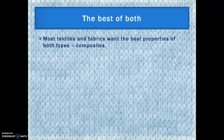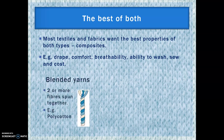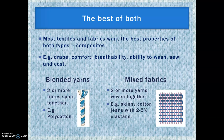Most textiles want the best properties of both natural and synthetic — we can think of these as a type of composite. To improve drape, comfort, breathability, washability, sewability, or to reduce cost, you might combine two types of fibre. This is done by either blending — spinning two or more fibres together, like poly cotton — or by mixing, where you weave two or more yarns together. For instance, skinny cotton jeans are two to five percent elastane, so in one direction you have cotton yarns and in the other you have elastane.